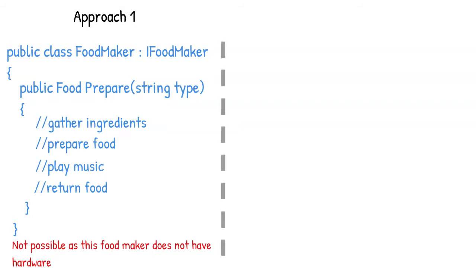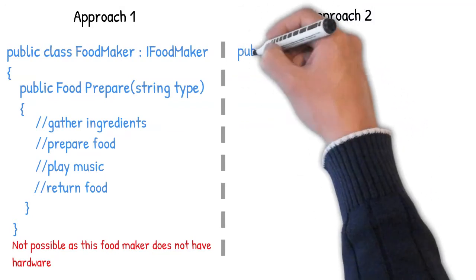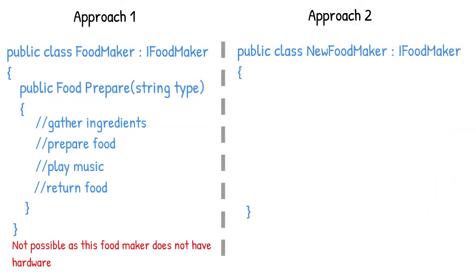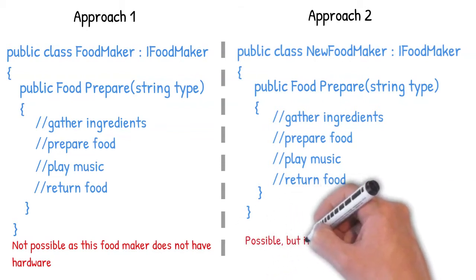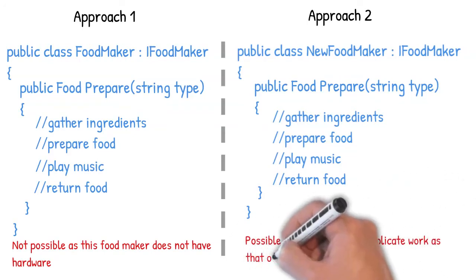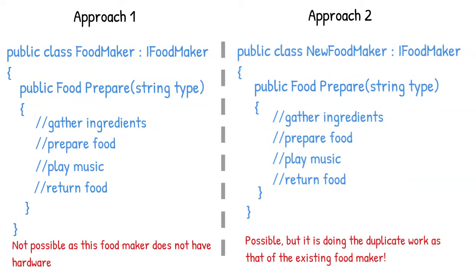Approach two is to create a new food maker that also implements the same interface IFoodMaker, and inside the prepare method it defines logic to both prepare the food and play the music. The benefit is that you can sell the original food maker and the new food maker to separate clients. However, this carries the drawback of having duplicate code in both classes, so this may not be the wise choice either.